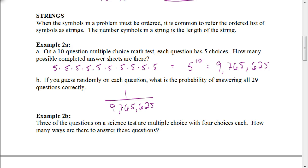Try this next one on your own: Three questions on a science test are multiple choice with four choices each. How many ways are there to answer these questions? The base would be four, and the string length is three questions, so it's four cubed, which equals 64.